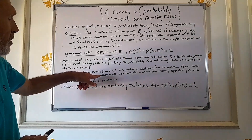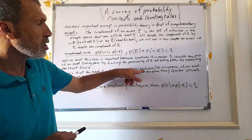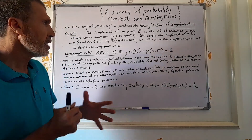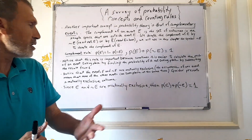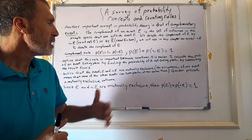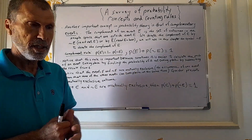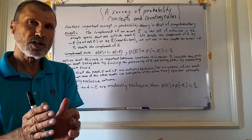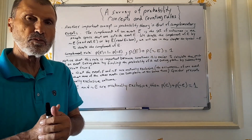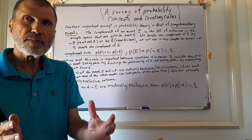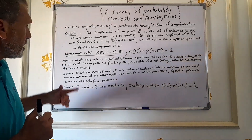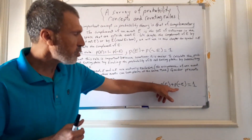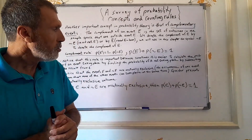Notice that events E and not E are mutually exclusive because the occurrence of one means none of the other outcomes can occur at the same time. The outcomes in event E are not included in the outcomes of not E, so both events are mutually exclusive and their intersection is 0. Since E and not E are mutually exclusive, probability of E plus probability of not E equals 1.